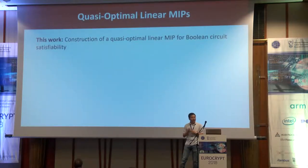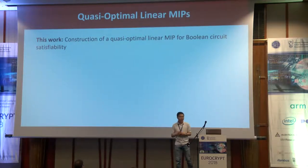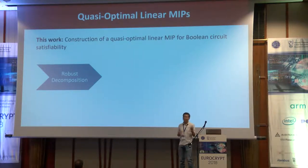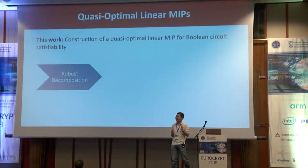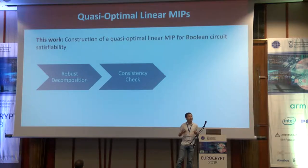The core focus of this work is building a new quasi-optimal linear MIP, which can then be compiled and bootstrapped into a quasi-optimal preprocessing SNARK. To construct the quasi-optimal linear MIP, we rely on two core ingredients: first, a robust circuit decomposition, which I will sketch in the next few slides; and second, a consistency check mechanism. Together, these give us the first quasi-optimal linear MIP construction.